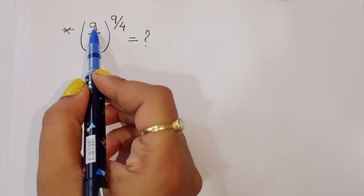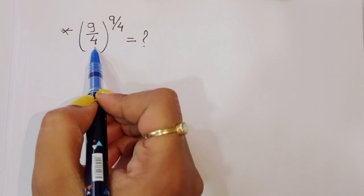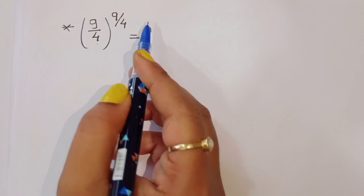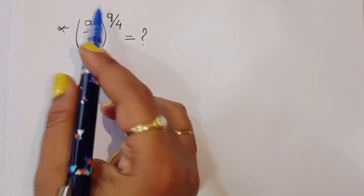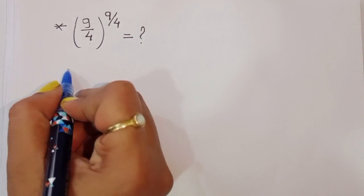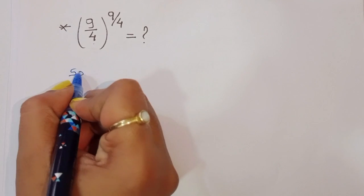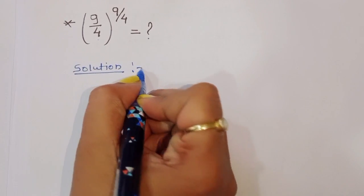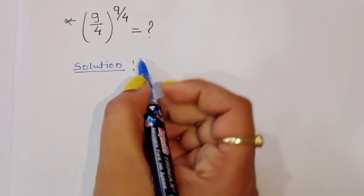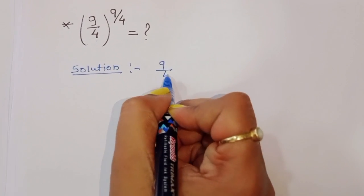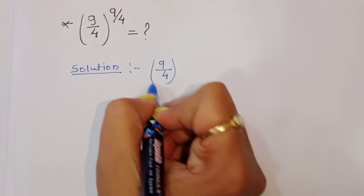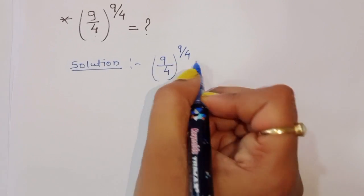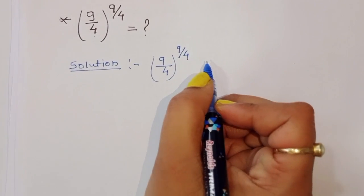The question given is: 9 divided by 4, raised to the power 9 over 4. We have to find out this value. Let's see the solution — how we can find out this value. First, what is given: 9 divided by 4, raised to the power 9 divided by 4.